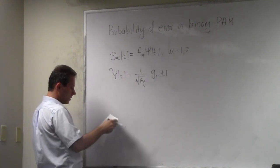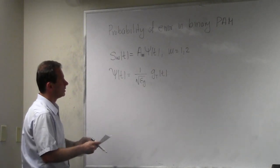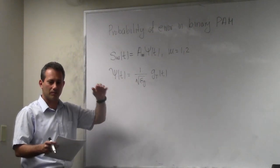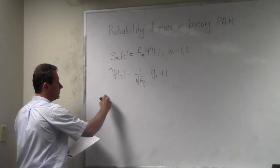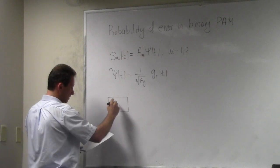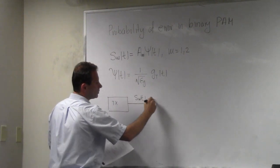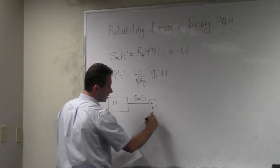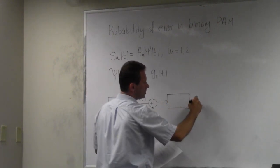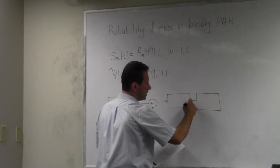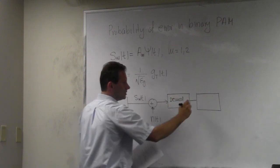Let me refresh your memory about the whole structure of the receiver here, since we went through one week without going through this. This is our system. We have a transmitter, then this transmitter will select one of those two symbols s_m(t). It will go through AWGN and be corrupted with the noise N(t). Our receiver consists of two processes: one is the process of demodulation, and the other one is the process of detection.